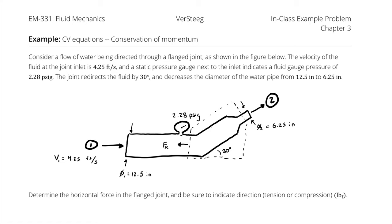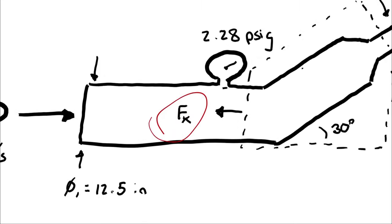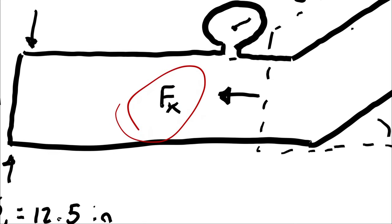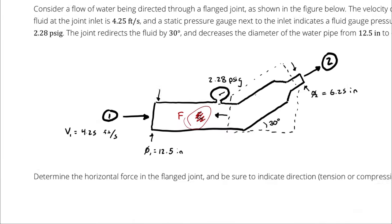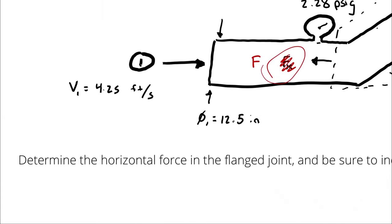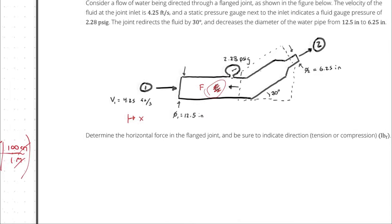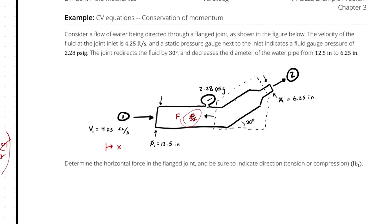We have an x component of momentum because we are looking for the force in the x direction. That Fx value — I'm going to call it F — is the placeholder name for the force in the left direction. I will describe my x-axis as going to the right, so it is positive in the right-hand direction.